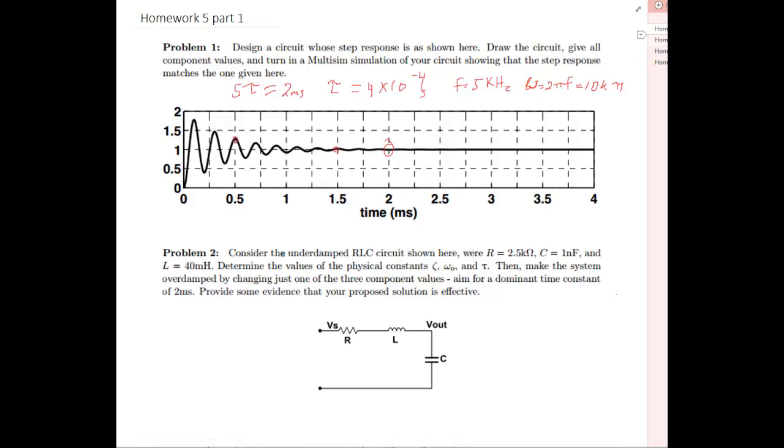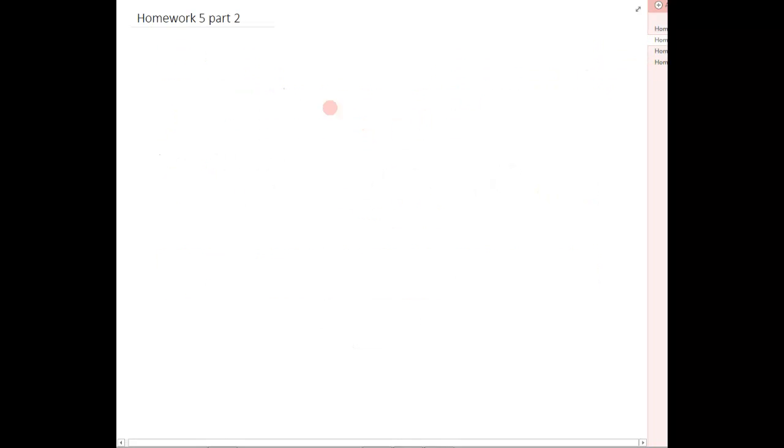So we're just going to write that down on the next page right here. So we want to build a circuit with our tau at 4 times 10 to the minus fourth and omega at 10,000 pi. We're going to build a simple circuit that's easy to work with, a simple RLC circuit with V out right here.